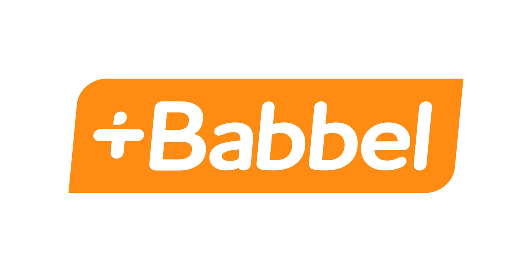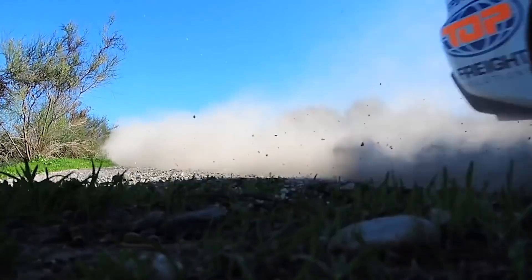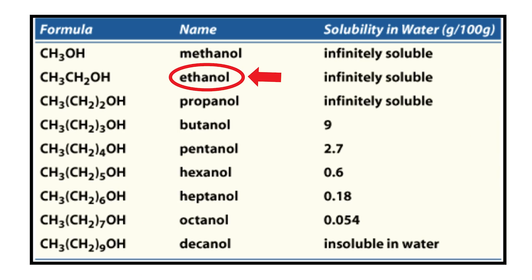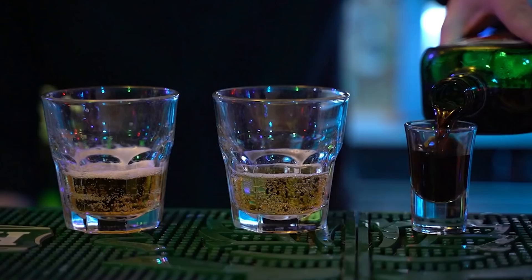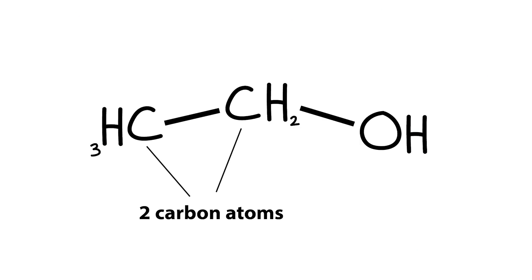This video is sponsored by Babbel. There are all kinds of alcohol molecules out there in nature, and they all do different things. For example, methanol is used in racing fuel, propanol is what's in rubbing alcohol, and ethanol is the alcohol you drink in alcoholic beverages. This simple two-carbon atom with a hydroxy group attached does so many things to your body when you drink it.